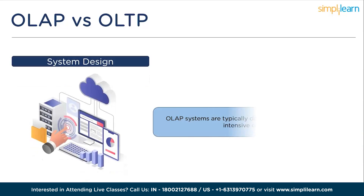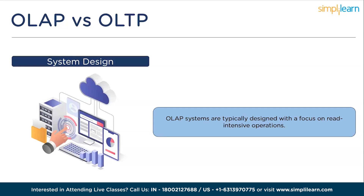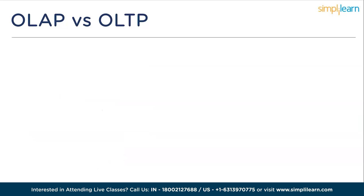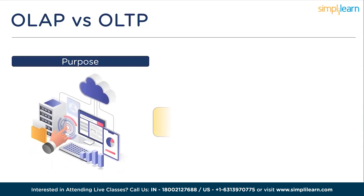Finally, we have system design. OLAP systems are typically designed with a focus on read-intensive operations, employing specialized data storage and indexing techniques optimized for analytical queries and aggregations. OLAP databases are often denormalized to improve query performance. OLTP systems are designed to handle a high volume of concurrent read and write operations, prioritizing data consistency and transaction integrity, often using normalized database structures to minimize redundancy and ensure data accuracy.